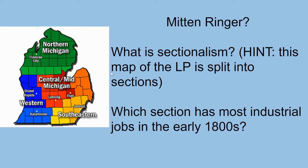What is sectionalism? Hint: this map of the lower peninsula of Michigan is split into sections. Which section of the U.S. — not of Michigan — has the most industrial jobs in the early 1800s? That will be multiple choice: the north, the south, or the west. Where are the most industrial jobs in the U.S. in the 1800s?